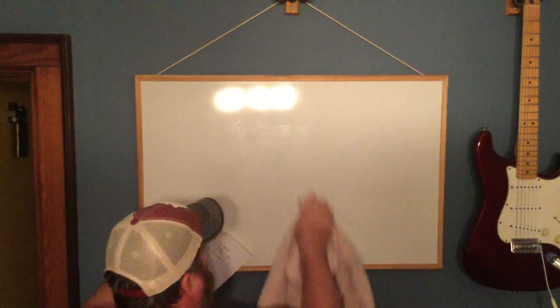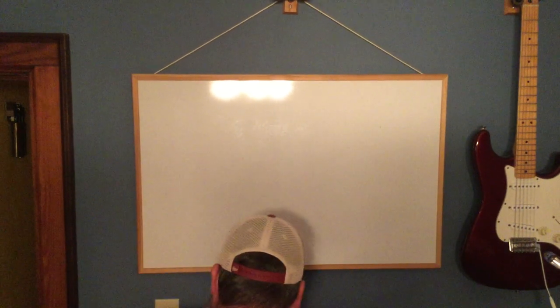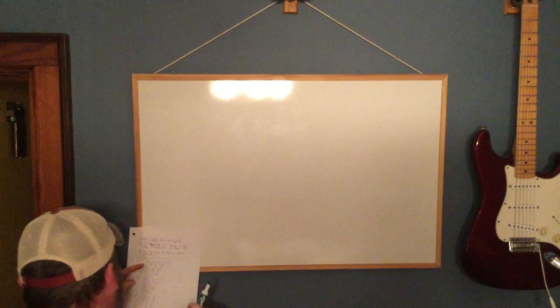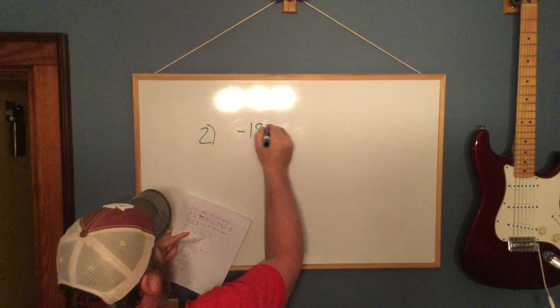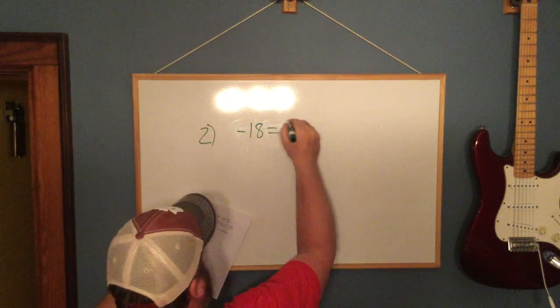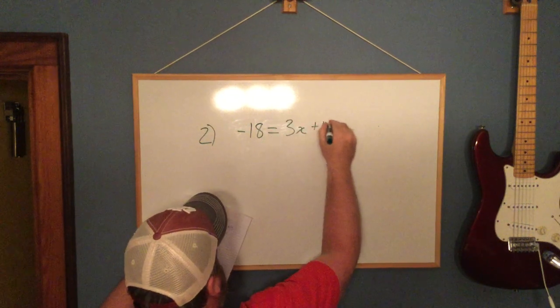Remember you can substitute back in to check your answer. 7 times 3 is 21, and then 2 times 3 is 6. So 21 minus 3 is 18, 18 plus 6 is 24. So it does check out.